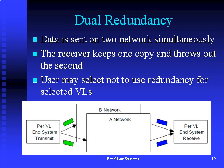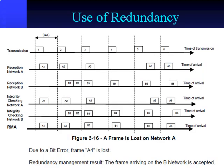Each end system is physically connected to two different networks, and each message is sent simultaneously on both networks. The receiver accepts whichever comes in first and throws out the second. The specification allows the user to select not to implement redundancy on a VL-by-VL basis. The final line of the diagram shows that only the first copy of each packet is returned to the application.